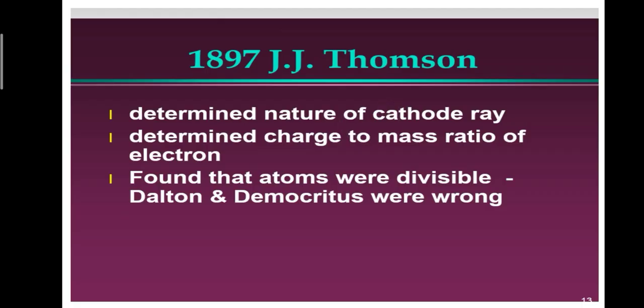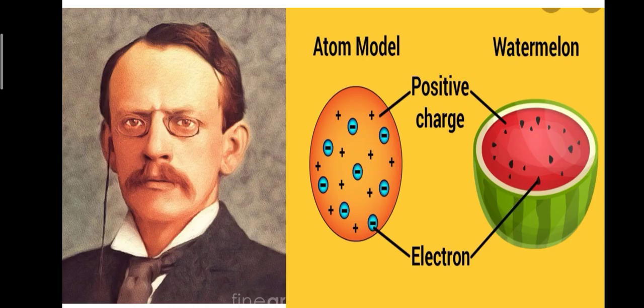In 1897, J.J. Thomson determined the nature of cathode rays and the charge-to-mass ratio of the electron. He found that atoms were actually divisible, contradicting Dalton and Democritus. Thomson proposed the plum pudding model: two types of charges are present in equal magnitude, with positive charge spread throughout the atom and negatively charged electrons embedded in it - like seeds in a watermelon.